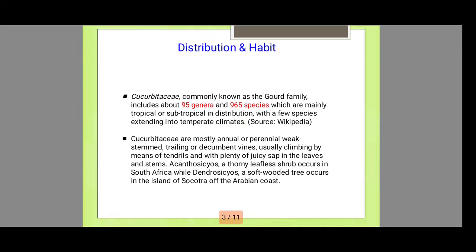It includes about 95 genera and 965 species, which are mainly tropical and subtropical in distribution, with a few species extending into temperate climates.